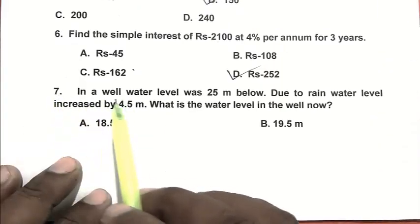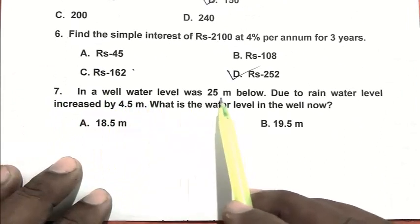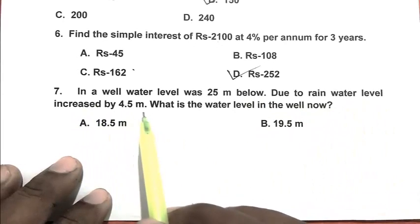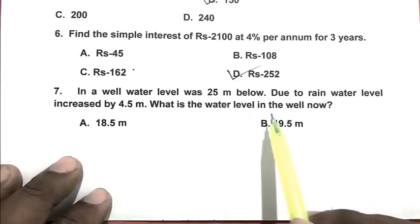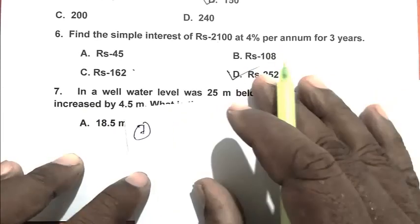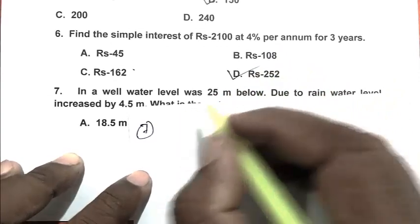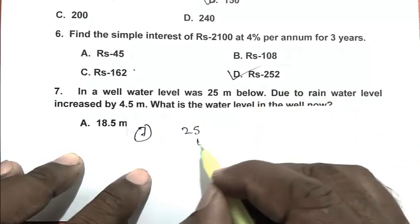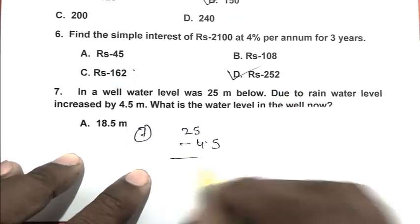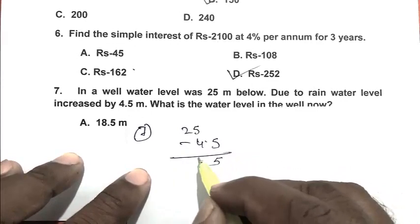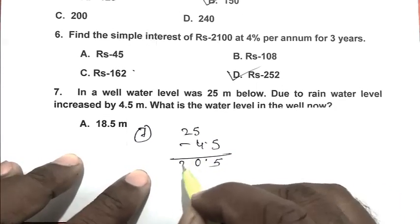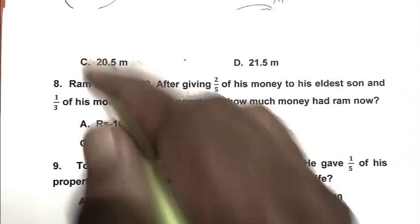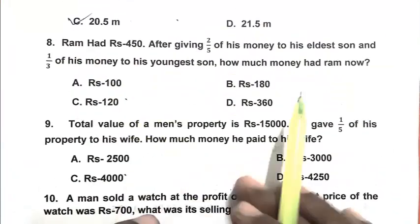Question number 7: In a well, water level was 20 meters below. Due to rain, water level increased by 4.5 meters. What is the water level in the well now? Earlier water level was 25 meters. It is increased by 4.5, so we subtract it. We got 20.5 meters. So C is the right answer.